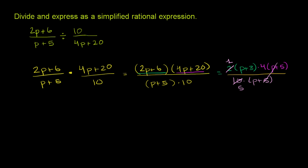And then we are left with, in our numerator, we have 4 times p plus 3. So we are left with 4 times p plus 3. And in the denominator, we are left with just a 5.